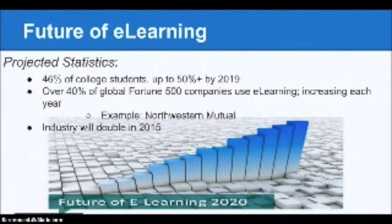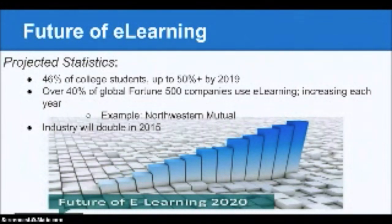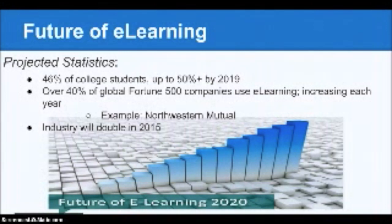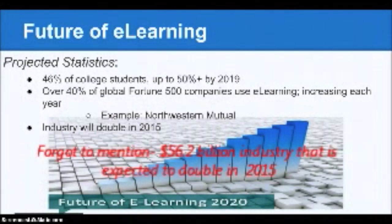Currently, 46% of college students are taking at least one class that involves e-learning, and this will be up to 50% or more by the year 2019. Also, over 40% of global Fortune 500 companies are using e-learning, and this is increasing each year. For example, Northwestern Mutual — number 110 on the Fortune 500 list — uses a program called ExamFX, which is a series of study materials both online and as an iPhone application, enabling you to study for licensing exams in insurance, retirement, and securities.